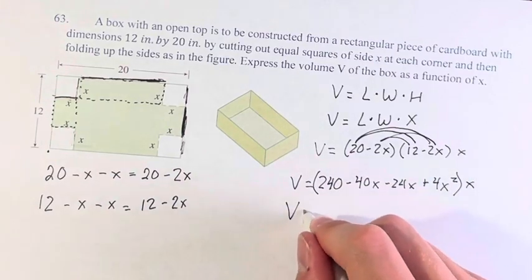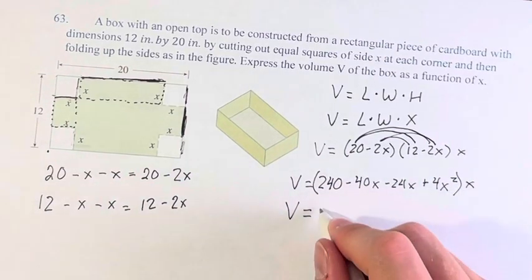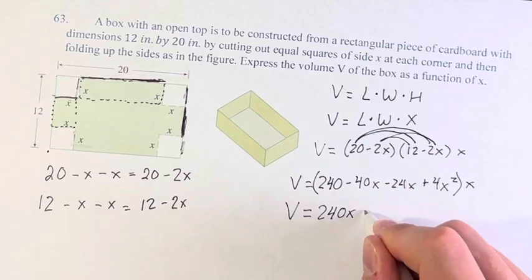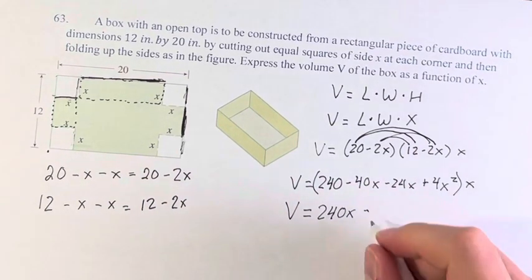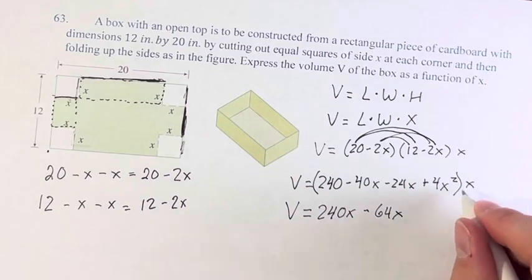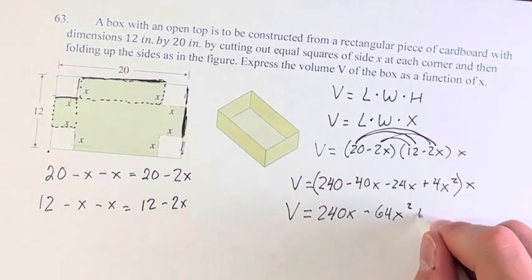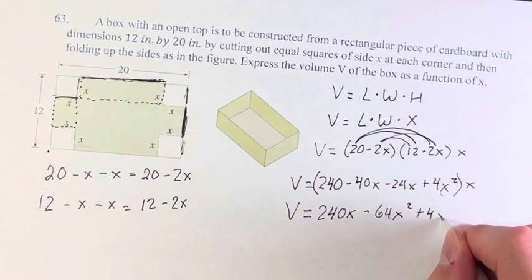This all is multiplied by x, which means the volume is equal to, distributing this x, 240x minus 40 minus 24 becomes minus 64x squared, plus 4x squared times x is 4x cubed.